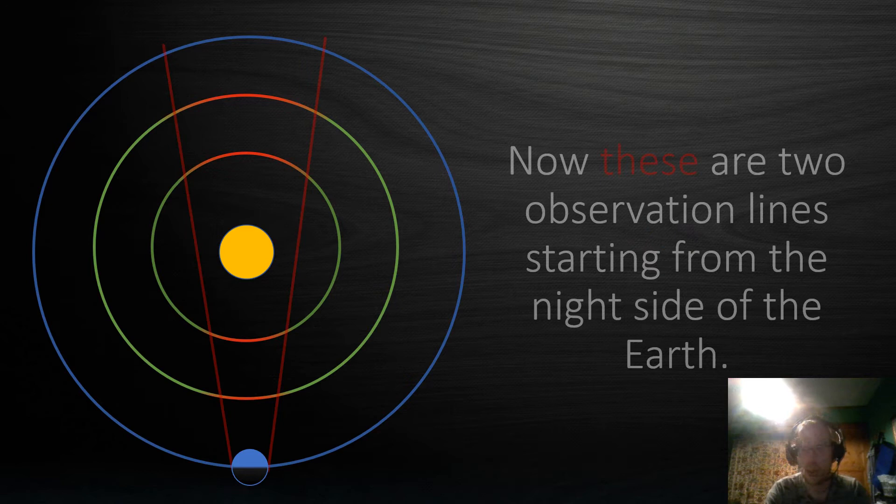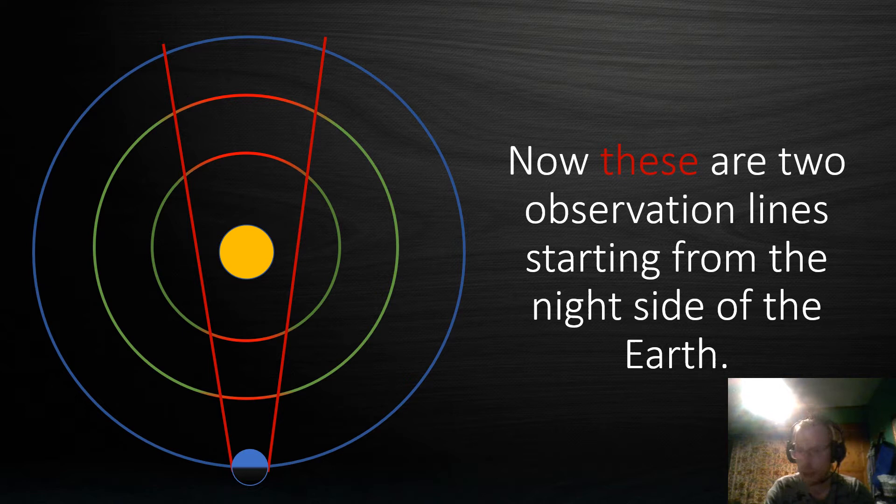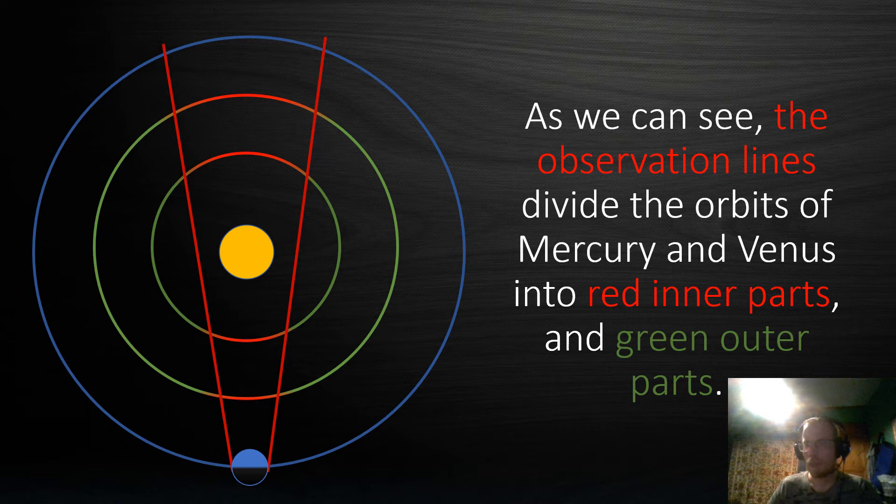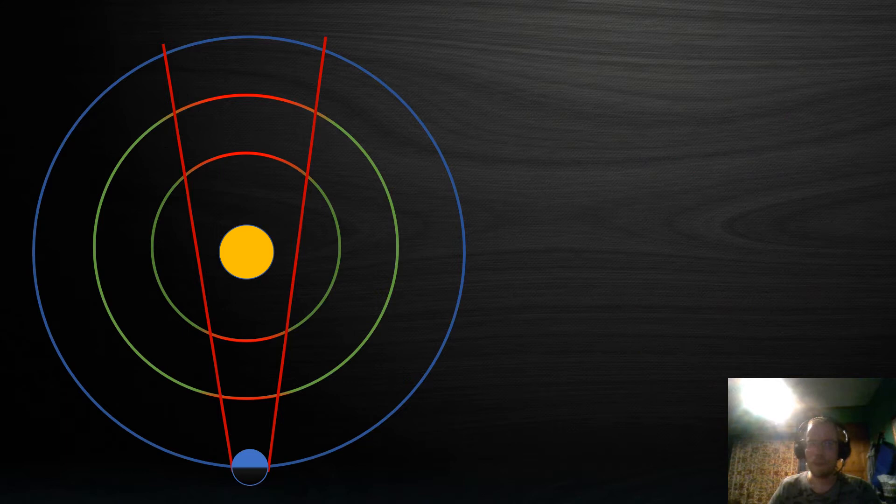Now these here are two observation lines starting from the night side of the Earth. And as we can see the observation lines divide the orbits of Mercury and Venus into red inner parts and green outer parts.